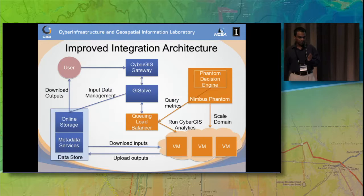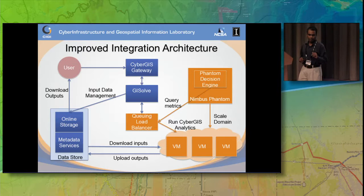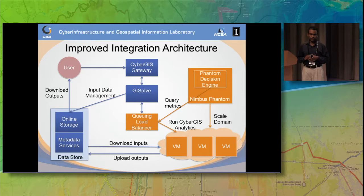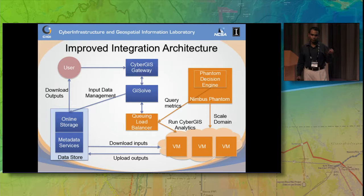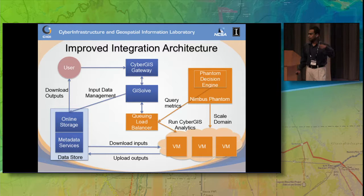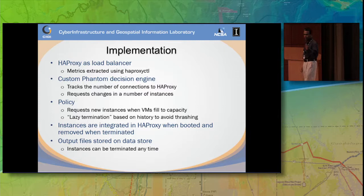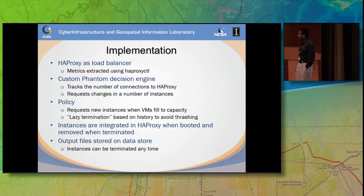The solution we came up with, in collaboration with Kate Keahey and her team at University of Chicago and Argonne National Lab, was to use what they call the Nimbus Phantom system. They have a decision engine to allocate new resources. We added a queuing load balancer in between, which monitors the load on the system. If there is a lot of load, the Phantom decision engine starts up cloud resources to handle demand, and when usage drops, it tears down those resources. We made changes in our middleware to talk to this queuing load balancer.